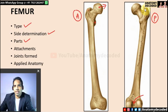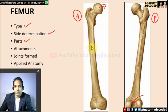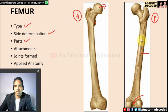On the inner aspect of the greater trochanter there is a depression called the trochanteric fossa. The shaft has three borders and three surfaces, but the medial and lateral borders are not well defined — it is almost circular. The only characteristic border is on the posterior aspect: the linea aspera.